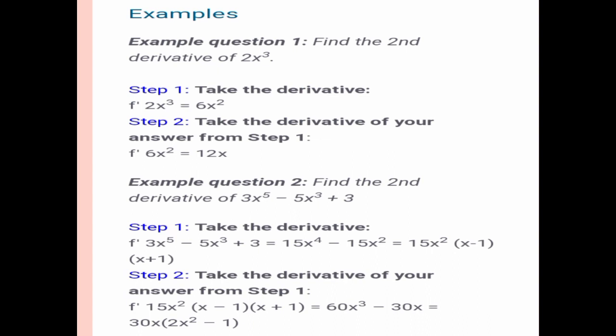So this is now the second derivative, which is f double prime. So 6x² is equal to 12x.